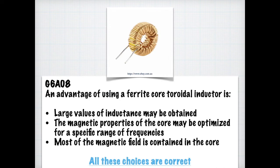Another test question from this section is, what is the advantage of using a ferrite core toroidal inductor? The advantages are that large values of inductance can be obtained because you're using a ferrite core or magnetic core. The magnetic properties of the core may be optimized for a specific range of frequencies because you can mix and match. You can create magnetic alloys. And most of the magnetic field is contained within the core, which is a distinct advantage. So for this question, all the choices are correct.